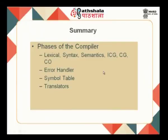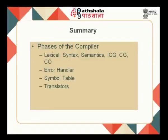The error handler will be prompted to the user for correction, for subsequent compilation iterations. To summarize, we have seen the six phases of the compiler: lexical, syntactic, semantic, intermediate code generation, code generation, and code optimization. We also talked about the need for an error handler and the symbol table, and we looked at interpreter and compiler as two types of translators. We will take an example and discuss that in the next module.